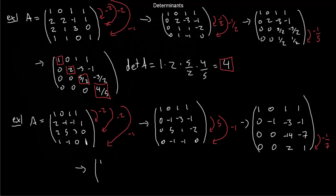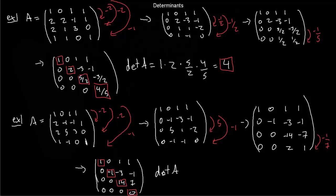That's still an upper triangular matrix — it's just got a 0 in one of the diagonal entries. When I take the product of the diagonal entries, I get 0. That's the determinant of this singular matrix: 0 times −1 times −14 times 0 equals 0.